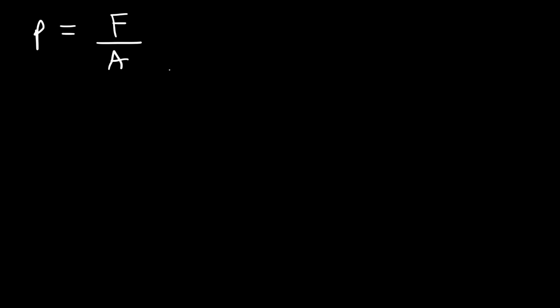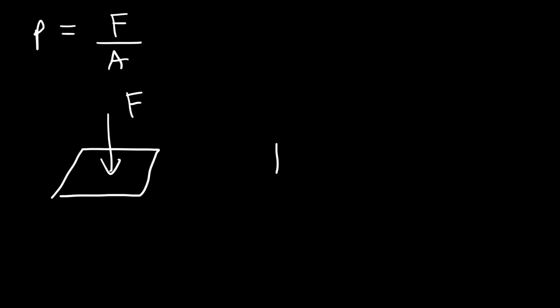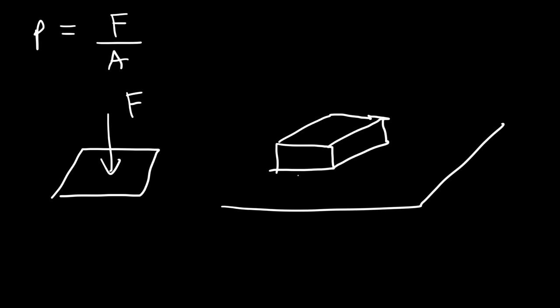What exactly is atmospheric pressure? We're going to focus on that in this video, but first we need to know what pressure is. Pressure is the ratio between force and area — every force exerted on a surface will apply a pressure on that surface. For example, if we have a book resting on a table, the weight of the book will exert a pressure on that table.